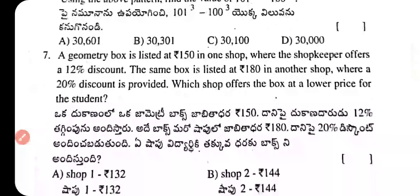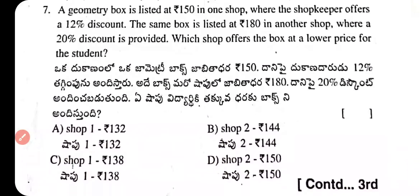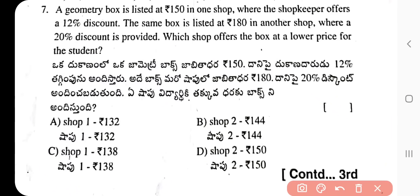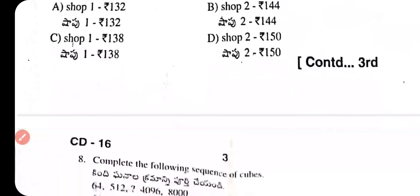Question 7: A geometric box is listed at ₹150 in one shop where the shopkeeper offers a 12% discount. The same box is listed at ₹180 in another shop where a 20% discount is provided. Which shop offers the box at a lower price? The correct answer is option A — Shop 1 at ₹132.